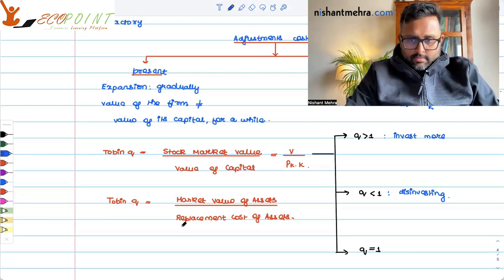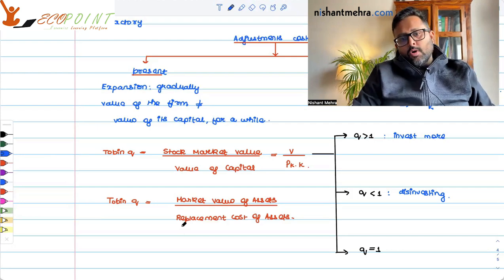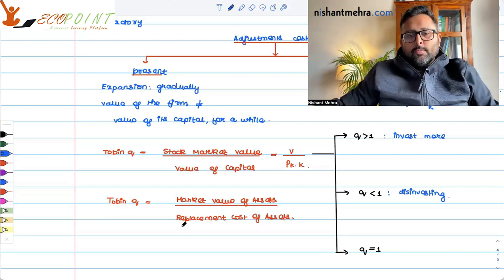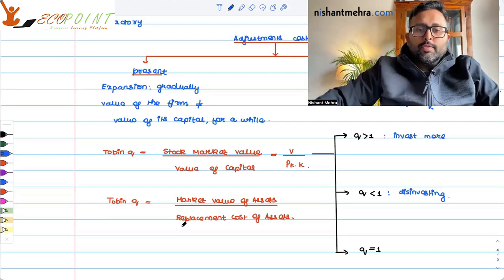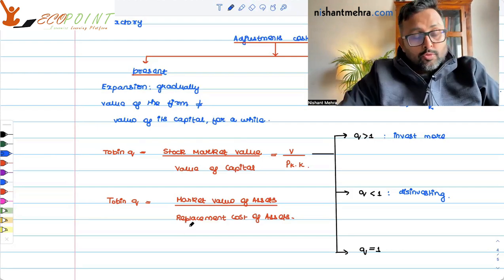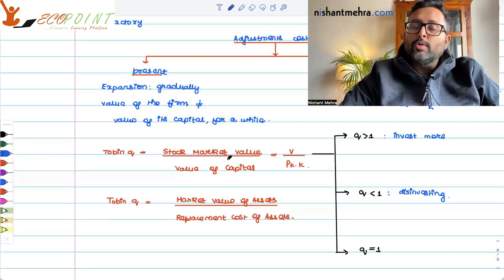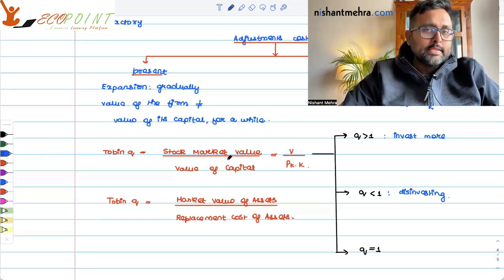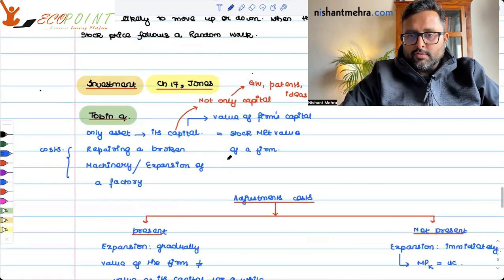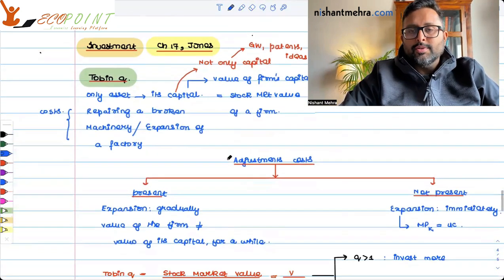This is a very small video about what is Tobin's Q and how to interpret the value of Tobin's Q greater than one, equal to one, and less than one. I hope it was of some use to you. Thank you.